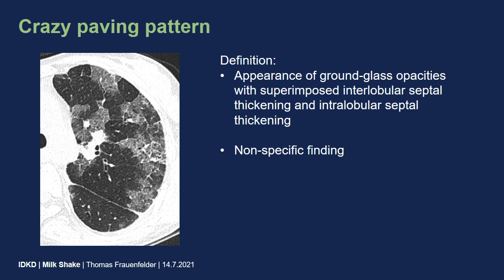The crazy paving pattern is defined as the appearance of ground glass opacities with superimposed interlobular and intralobular septal thickening, and is not a specific finding. It is restricted more to the secondary lobule level. Here you see the border of a secondary lobule — inside you have the ground glass opacities and the septal thickening, but just adjacent there is a totally normal secondary lobule, as you can see here with the central dot.